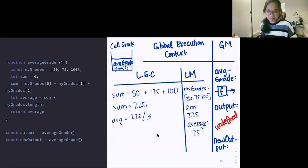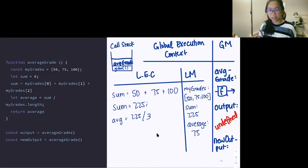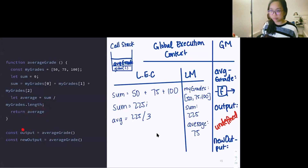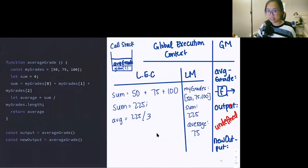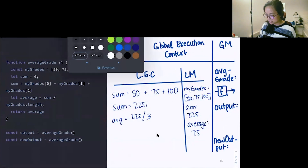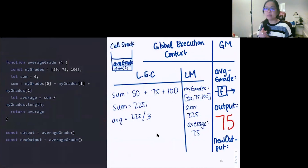We have something called a return keyword. What it does is take the value of whatever it's returning and give it to whatever we are assigning it to. In this case, we're returning the average — this value of 75 — and assigning it to our output. So now our output is no longer undefined; our output is now 75. That happens because we have the return keyword placed there.